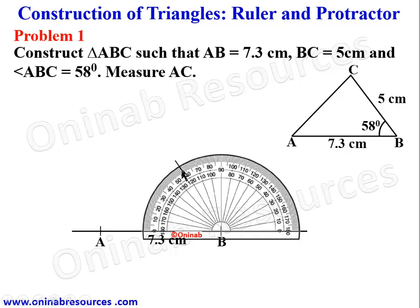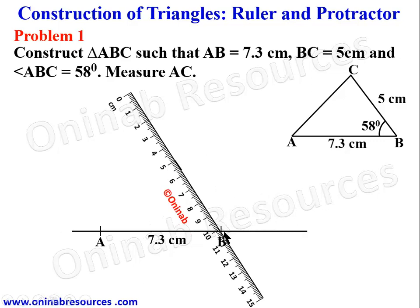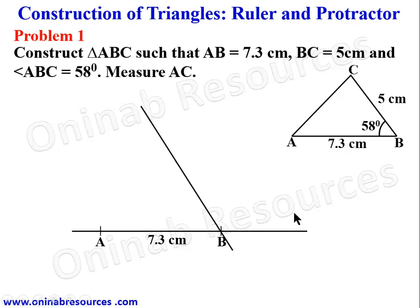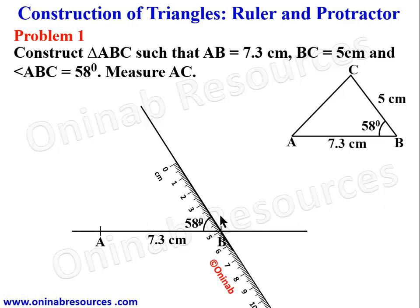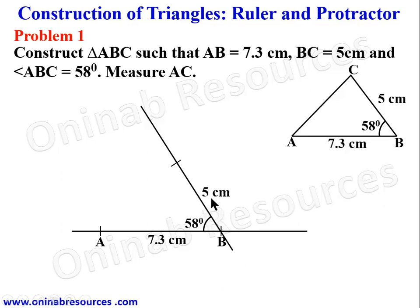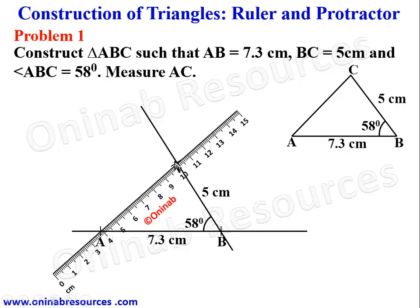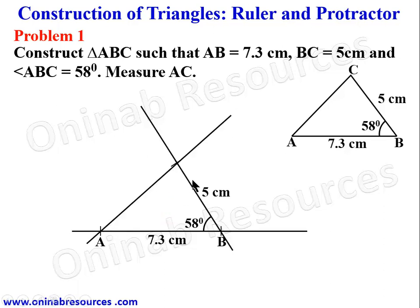Having gotten our 58 degrees, we remove the protractor, then place our ruler and draw the line. We have constructed angle 58 degrees. We then locate point C, which is five centimeters away from B. We place our ruler, placing the 5 centimeter mark at B and marking the zero point — so from there to that place is five centimeters. We place our ruler to join the two points — this point is point C. We have just succeeded in constructing triangle ABC.